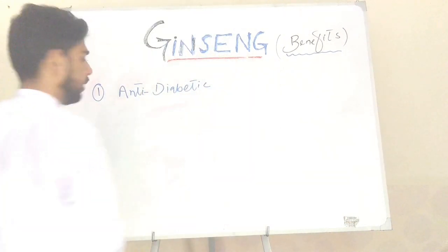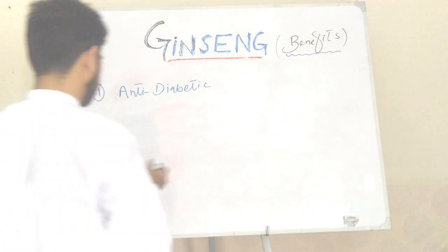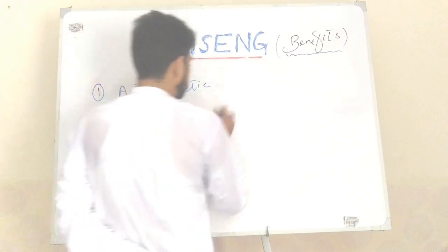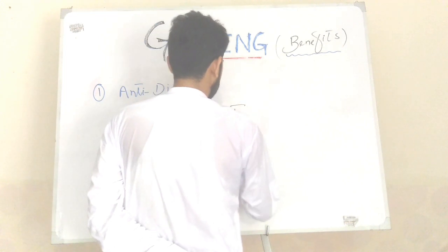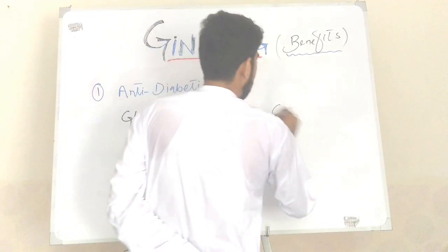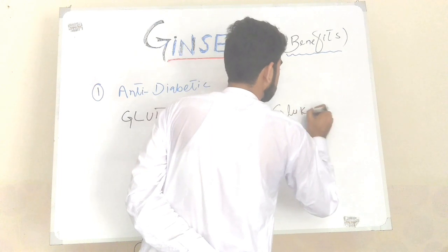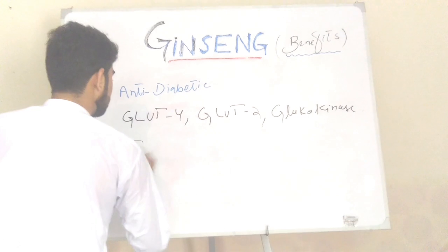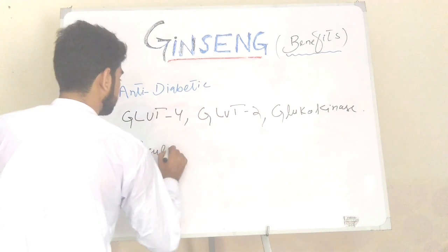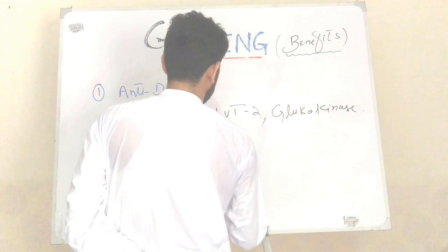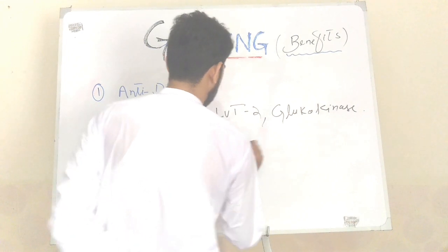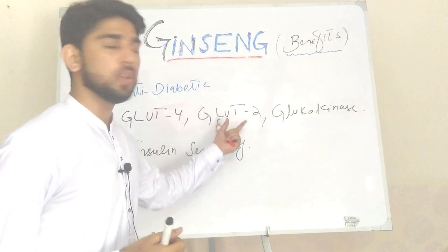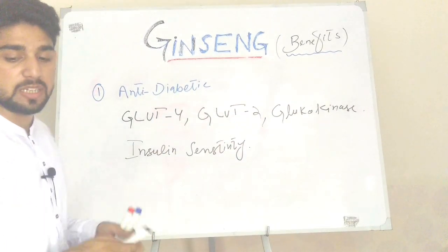PPAR gamma increases the expression of GLUT4 and GLUT2, which are glucose transporters. GLUT2 is insulin-independent, while GLUT4 is insulin-dependent.